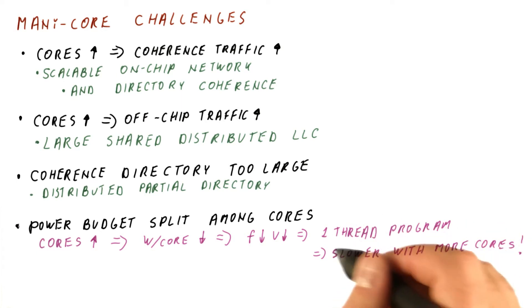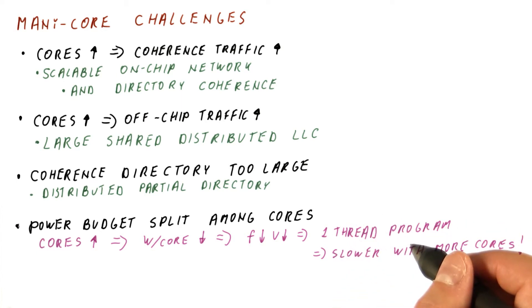Because that single-threaded program, if we only had one core, would get the power budget of the entire chip. With let's say 64 cores, it gets only a 64th part of the power budget.